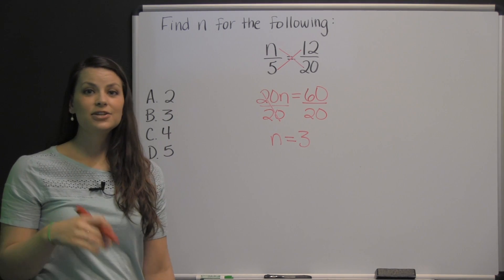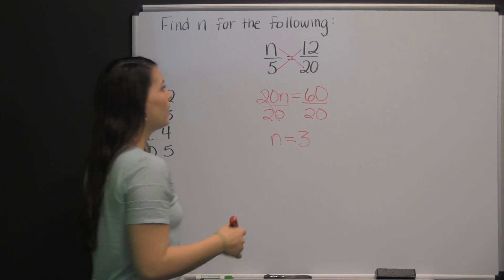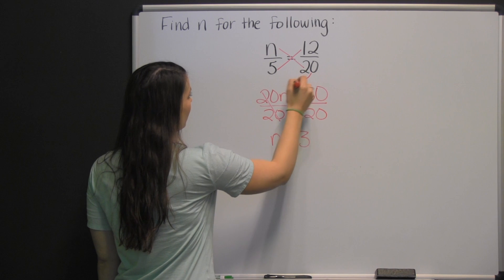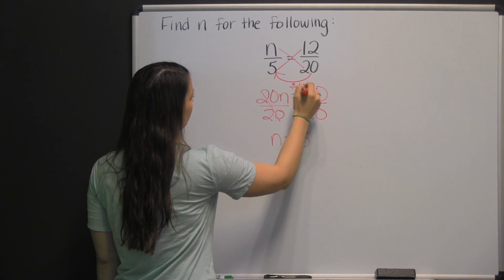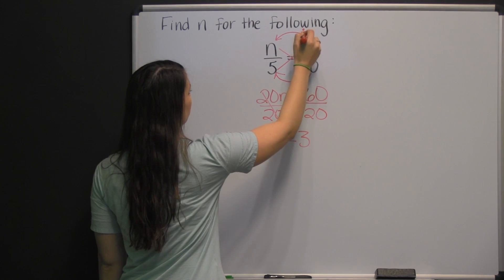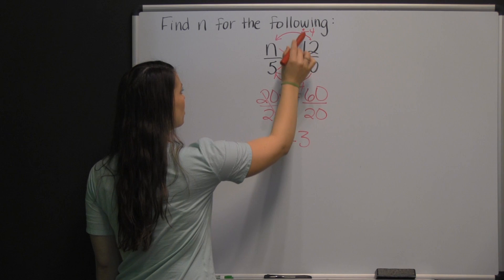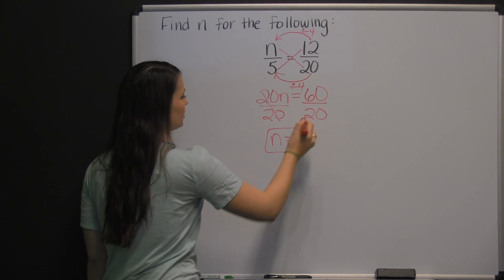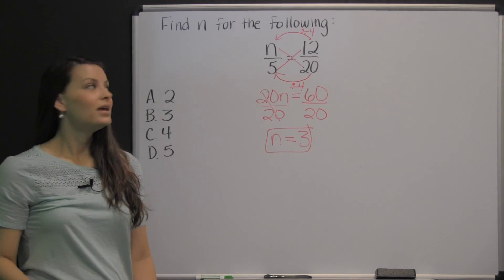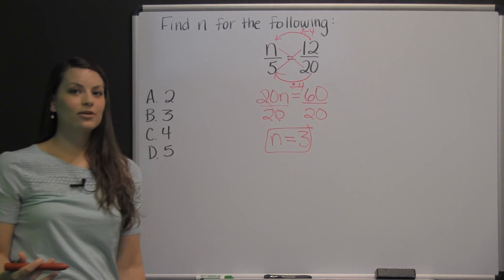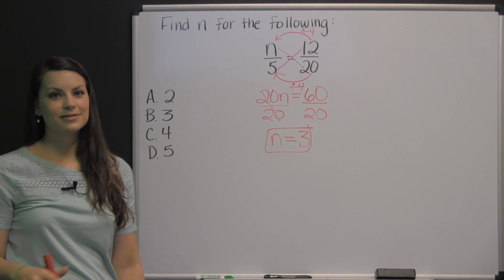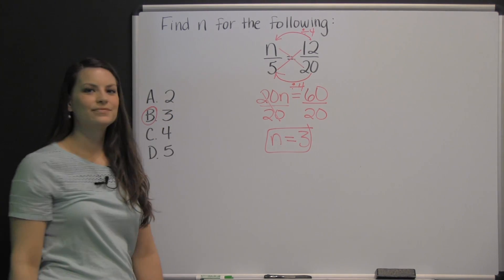But sometimes it's easier to see the answer just by looking for a pattern in your numbers. For example, to get from twenty to five, you divide by four. Do the same thing to your numerator: twelve divided by four is three — you get the same answer with a little less work. Again, that doesn't always work, but you may want to try it first to save time on your TABE test. So there's our answer: three.